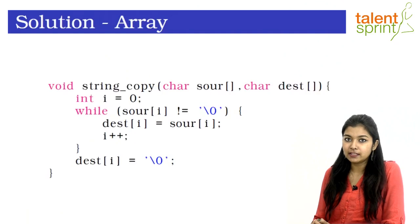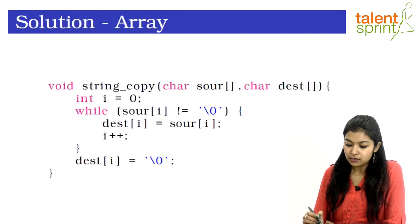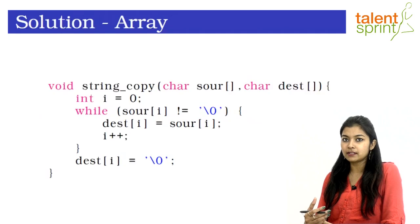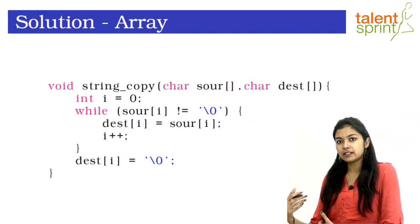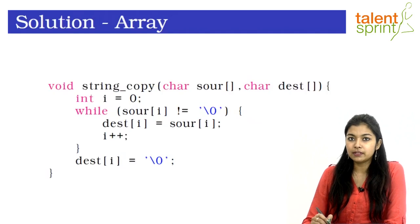The approach is really fairly simple — you iterate through the string one by one, pick each character, and copy it to the next string. As you can see, we have written the function string_copy that takes two arrays: source and destination. The source array contains the string that needs to be copied, and the destination array will contain the copied string. We have also created a variable i to traverse through the array.